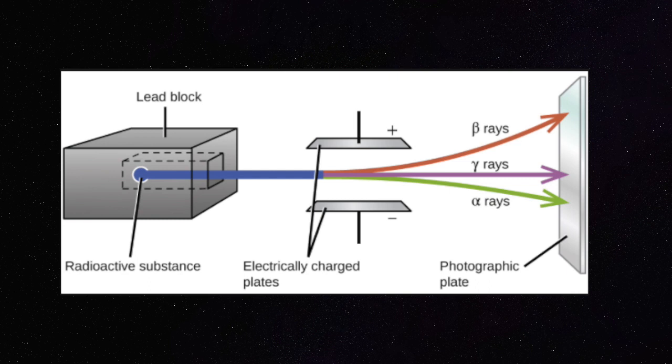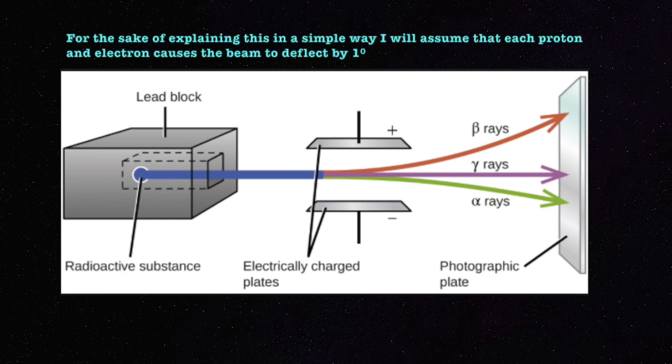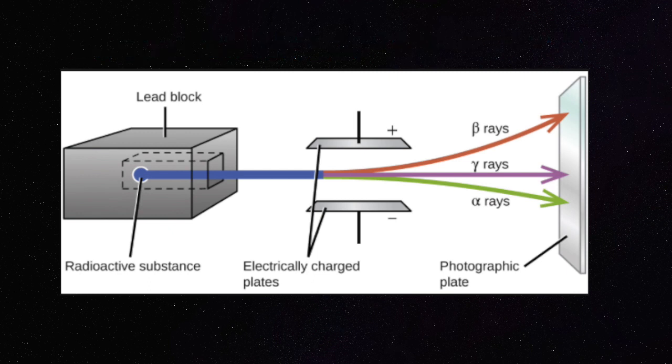If the protons are deflected by 15 degrees, that means if we keep adding electrons, they're going to move closer to the beta rays area. If we had 15 electrons and 15 protons, that cancels out and becomes neutral. If we keep adding more electrons, they're going to be deflected to the negative side where the beta rays are. That means there should be more electrons than protons for particle Y.